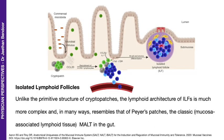These are isolated lymphoid follicles. They are a little more organized when compared to the primitive cryptopatches, but not as organized as Peyer's patches — somewhere in between.